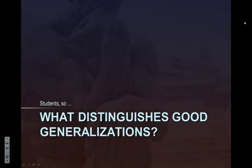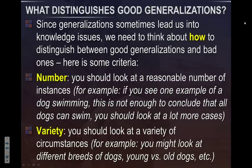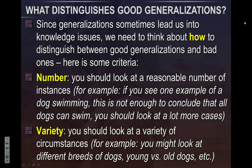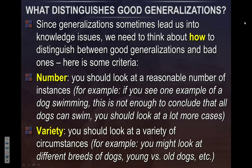So what makes a good generalization? When can you conclude 'all chairs are blue,' 'all metals expand when heated,' 'all cookies are delicious'? There are several things that go into that. One is number — if you encounter a large number of instances, that's probably a good time to make a generalization. For example, if every dog you've ever owned or seen can swim, you might come to the inductive conclusion that all dogs can swim. That would be reasonable with a large number of cases.